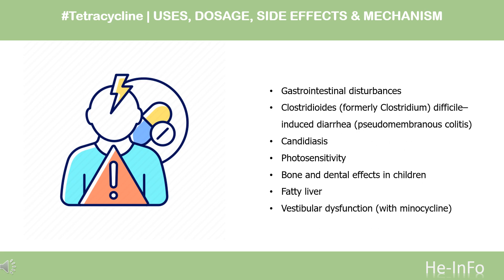Side effects: Adverse effects of tetracyclines include gastrointestinal disturbances, Clostridioides (formerly Clostridium) difficile-induced diarrhea, pseudomembranous colitis, candidiasis, photosensitivity, bone and dental effects in children, fatty liver, and vestibular dysfunction with minocycline. All oral tetracyclines can cause nausea, vomiting, and diarrhea, and can cause C. difficile-induced diarrhea, pseudomembranous colitis, and candidal superinfections. If not swallowed with water, tetracyclines can cause esophageal erosions.